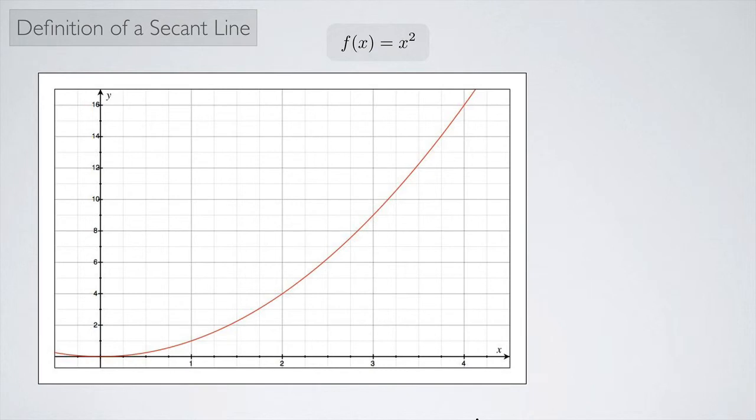And maybe I want to find the equation of the secant line that connects the points at x equals 1 and x equals 4. In other words, this line right here.